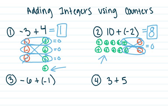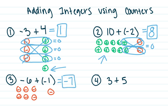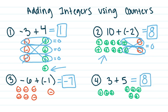Now let's take a look at what happens when I have all the same types of numbers. I have six negatives and one negative. Do I have any zero pairs? No, they're all negatives. When they're all negatives, I can just add them all together — I have a total of negative seven. There's nothing to cancel out because I don't have any positives. For number four, I have three positives and five positives. Do I have any zero pairs? No, because I don't have any negatives. I count up all the positives — there's a total of eight positives — so my answer is eight.